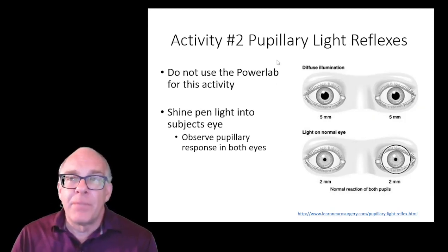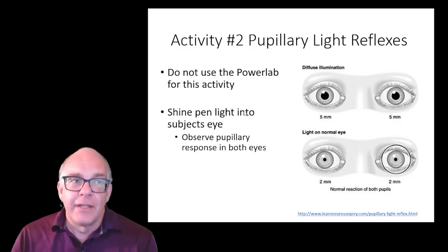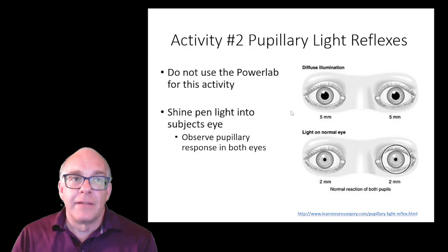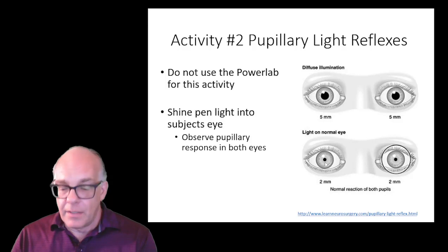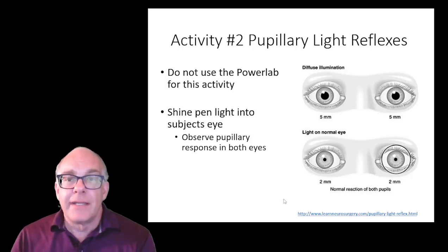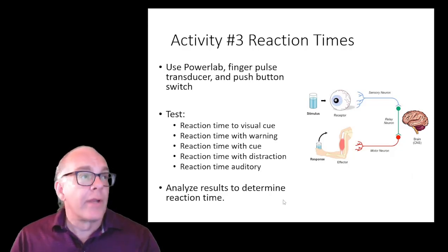The second activity is the pupillary light reflex, also without the PowerLab. You'll use a pen light or small flashlight, shine it into the eyes, and observe the response in both eyes — noting whether the pupils are enlarged or constricted — and record those observations in the lab report.